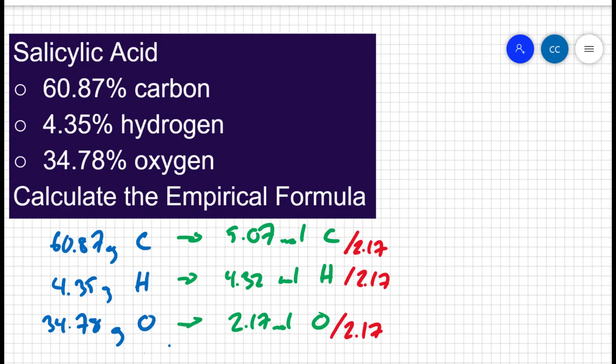Which is going to give me one oxygen, 1.99 hydrogens. I'm pretty comfortable calling that two hydrogens. It's not a whole lot of rounding there. And 2.33 carbons.